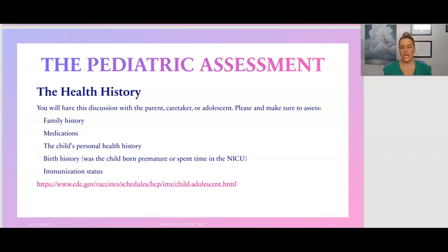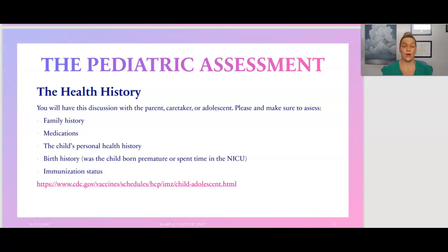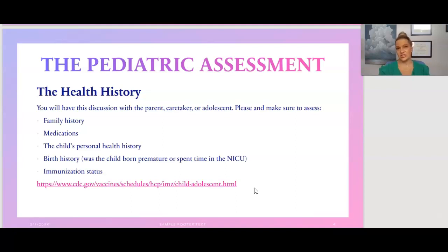Being premature may indicate a birth injury or underdeveloped lungs, which could predispose the child to health conditions as they grow. You also always want to ask about immunizations — are they up to date? There's a link here to the CDC that provides a nice overview of all the vaccinations children should have and at what age.